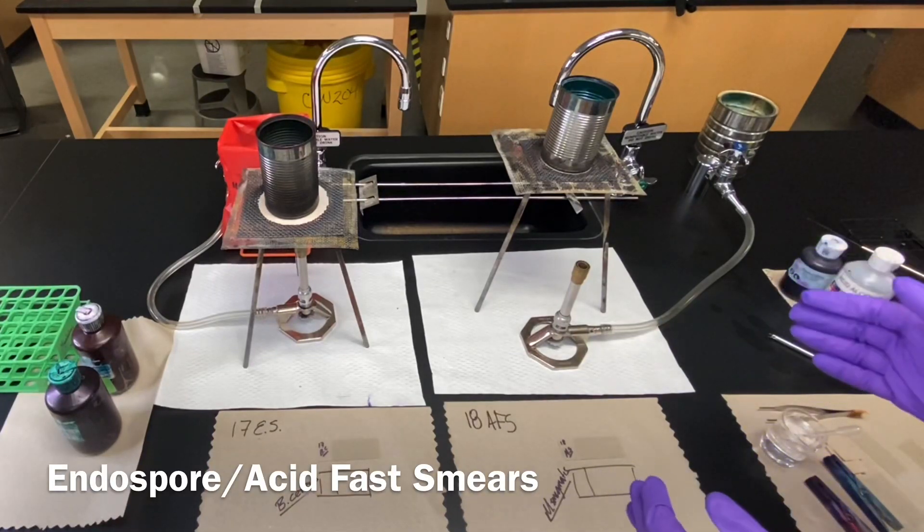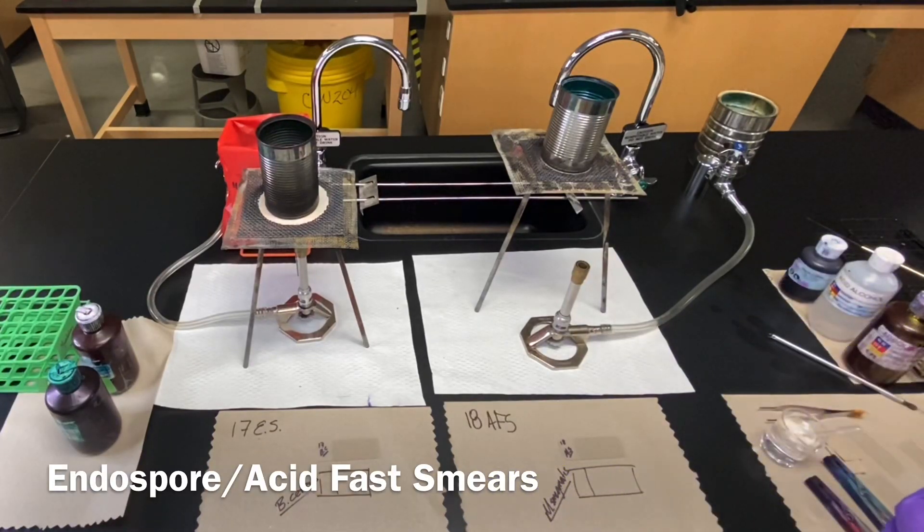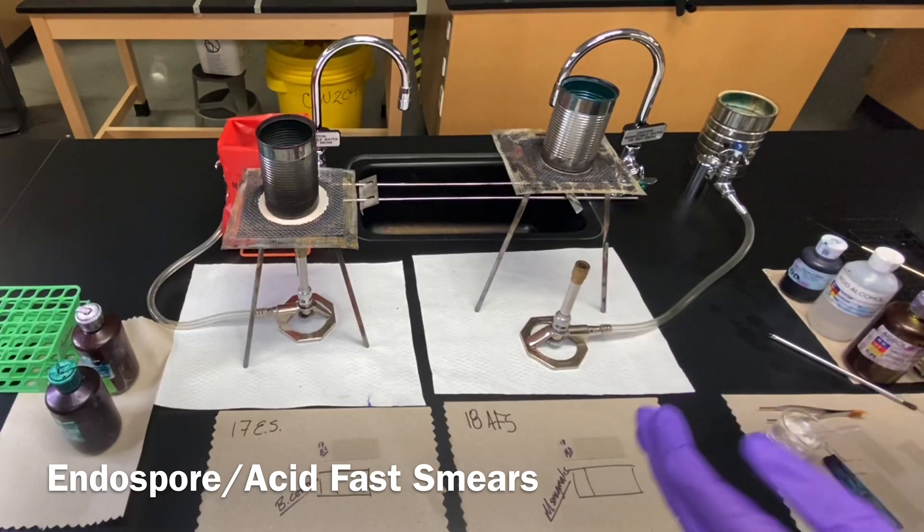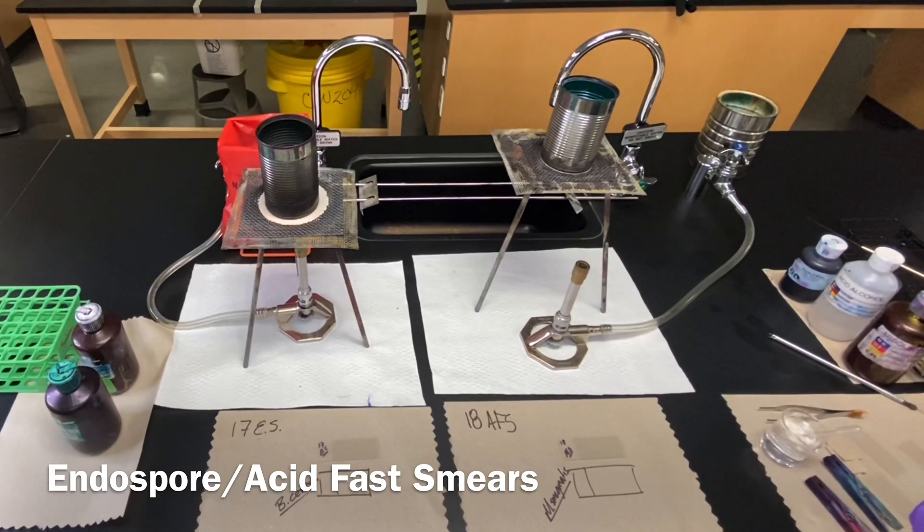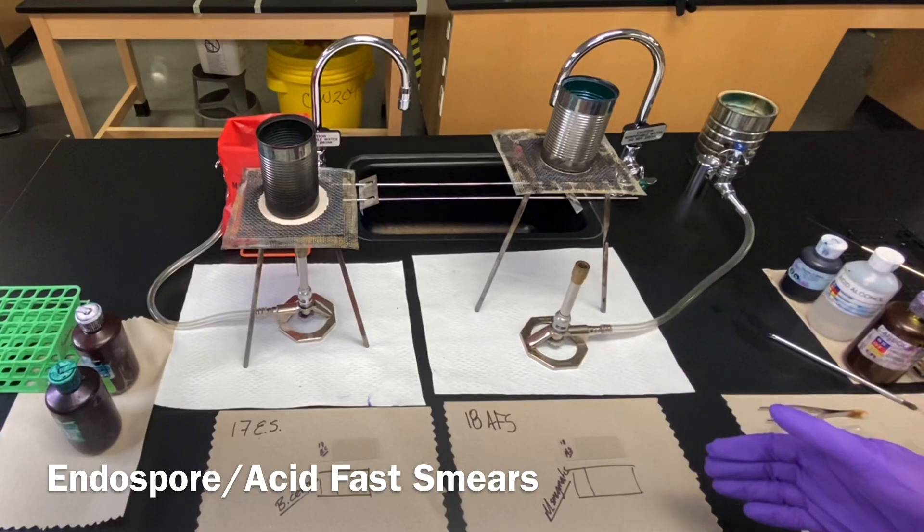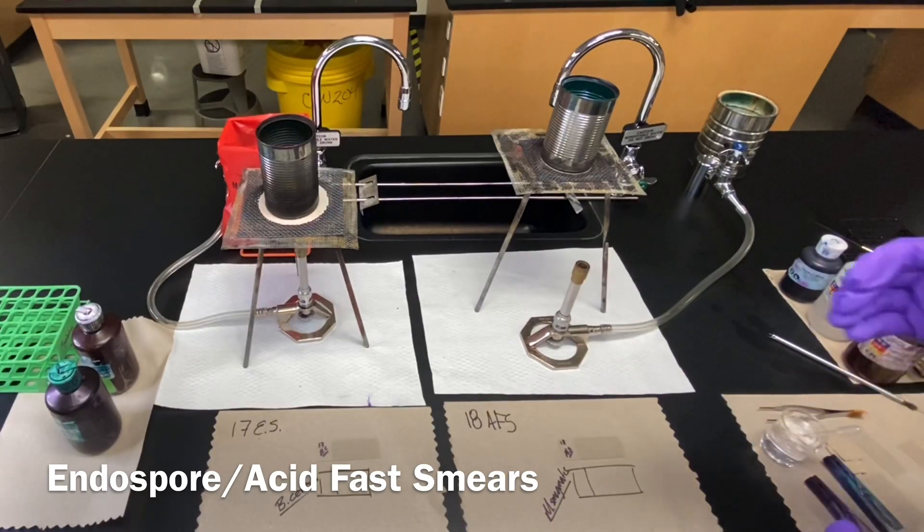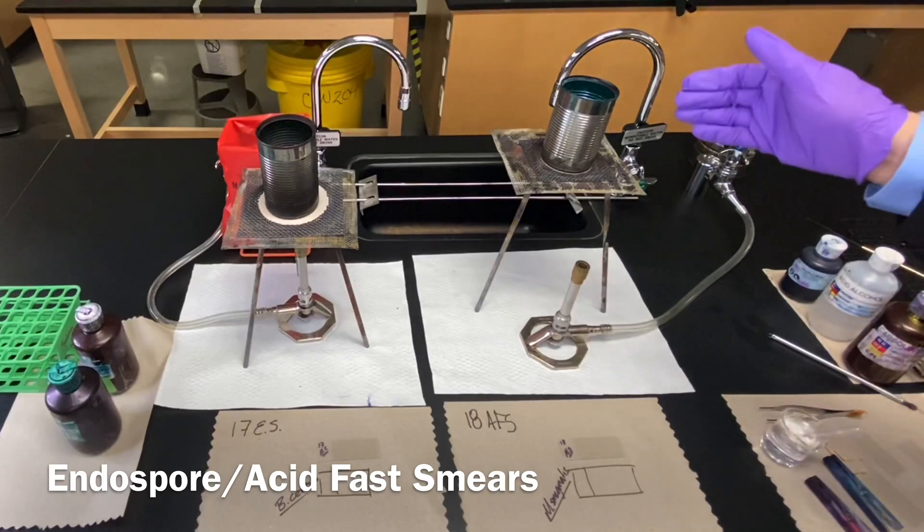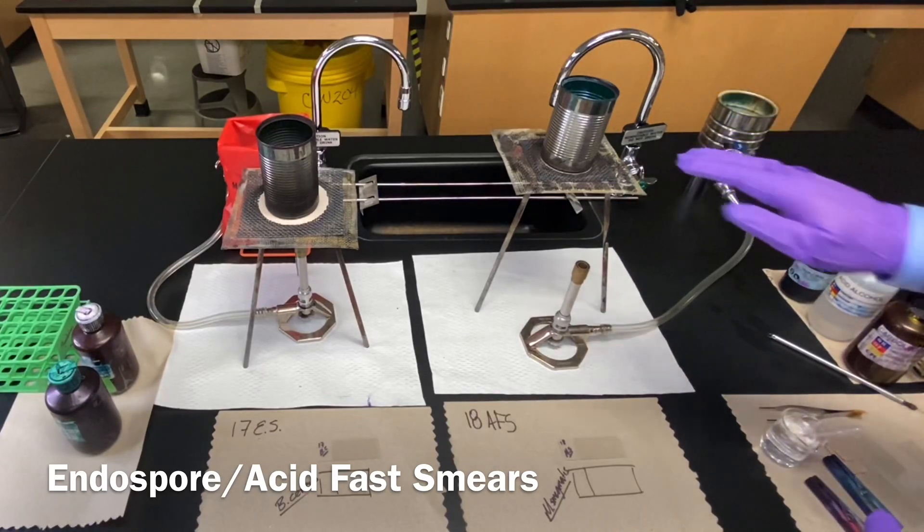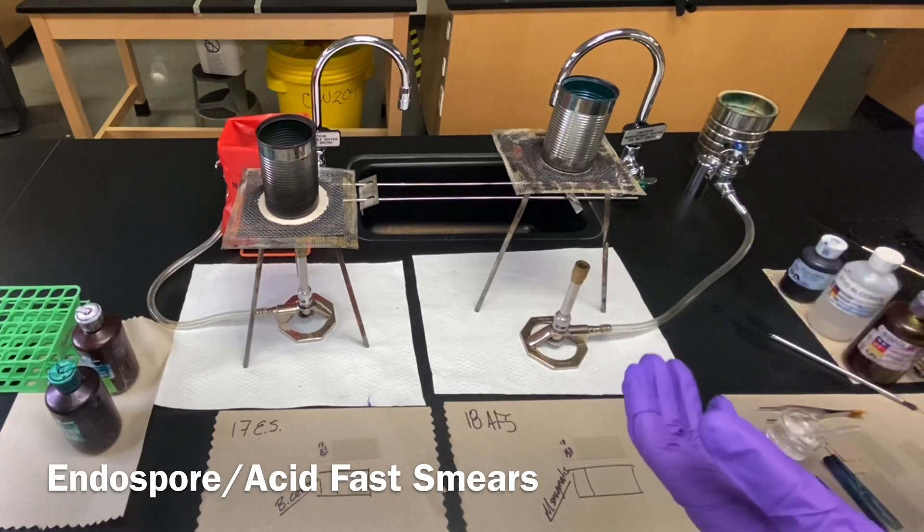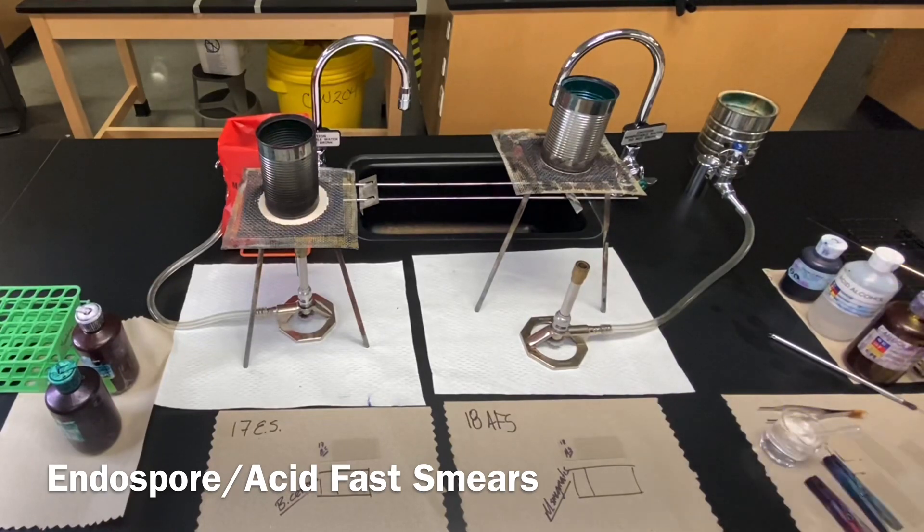For labs 17 and 18, the endospore stain and the acid-fast stain, they require an additional steaming protocol. In other words, we're going to create our smears first, which is where we'll start right now, and then we'll require about a 10-minute steaming process in which we'll set up our slides on top of soup cans, about a third full with water, allowing the steam to help them absorb the actual stains themselves.